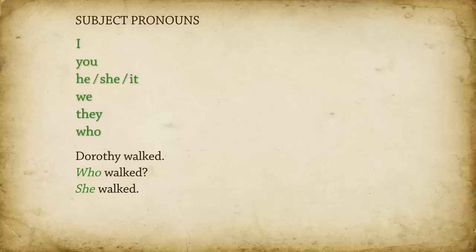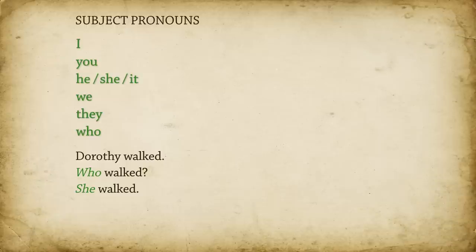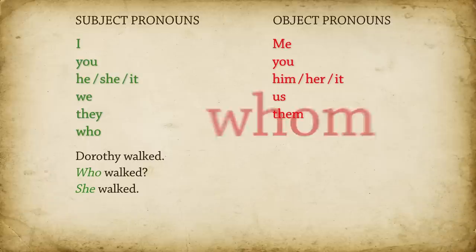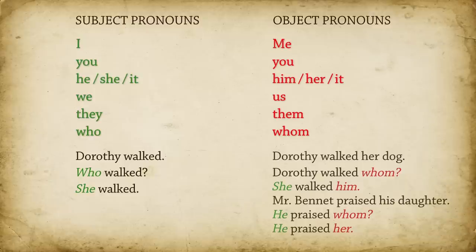But there's another set of pronouns that you can use instead of the direct object. We call these object pronouns. This list includes me, you, him, her, it, us, them, and whom. Dorothy walked her dog — Dorothy walked whom? She walked him. Mr. Bennett praised his daughter — he praised whom? He praised her.